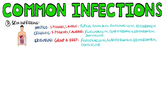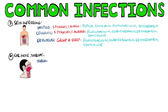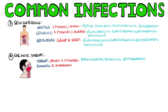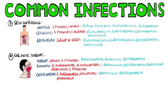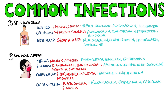Erysipelas is caused by Group A Strep, mostly Strep pyogenes, and can be treated with flucloxacillin, with clarithromycin, erythromycin, or doxycycline for penicillin-allergic patients. For ear, nose, and throat infections, which are often caused by Strep pyogenes, throat infections are treated with phenoxymethylpenicillin or erythromycin alone if allergic. Sinusitis, commonly caused by Strep pneumo, H. influenza, Moraxella, and Strep pyogenes, can be treated with amoxicillin, doxycycline, or erythromycin. Otitis media is treated with amoxicillin or erythromycin if allergic, while otitis externa due to pseudomonas or Staphylococcus aureus is treated with flucloxacillin, erythromycin, or ciprofloxacin.